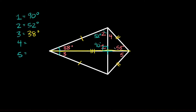Now for angle four: we know the intersection creates a right angle of 90 degrees, so using the triangle's three angles adding up to 180, angle four must be equal to 37 degrees. And lastly, angle five — using the two big triangles again with three congruent sides, all three angles are congruent. So if the corresponding angle is 53 degrees, angle five is also 53 degrees.